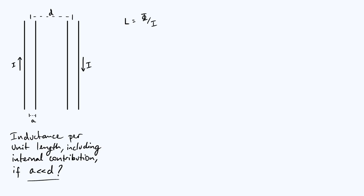In order to split the problem into more approachable chunks, I'm going to split the diagram up into three separate spatial regions. Region one is basically inside the first wire on the left. Region two is the region between the two wires, and region three is inside the second wire on the right. The total flux linkage is just the sum of the flux linkages in each region: φ = φ₁ + φ₂ + φ₃.